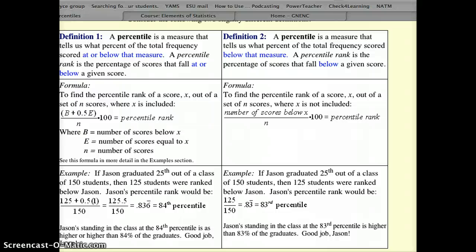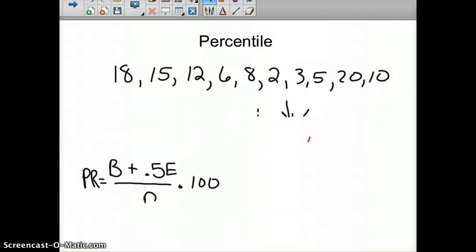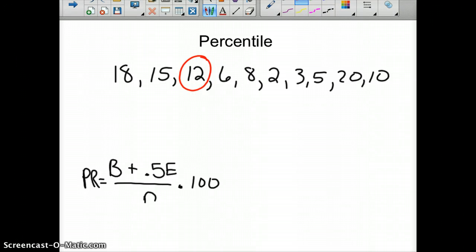So here we go. Let's say we had this set of data. And what we have is we have 18, 15, 12, 6, 8. We basically took a 20 point test. And these were the scores that the class got. Let's say you were one of the lucky ones that got 12 out of 20 correct. So your score is right there.